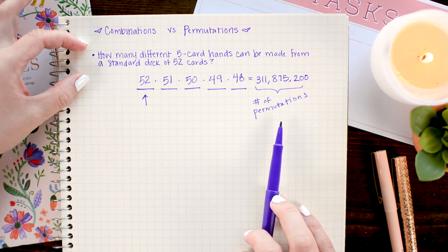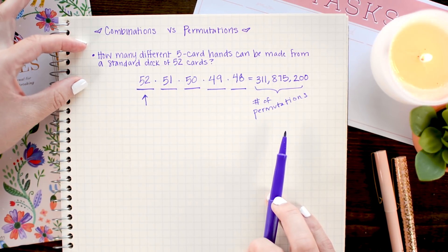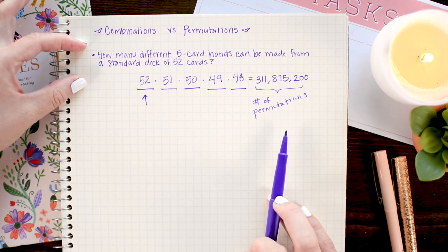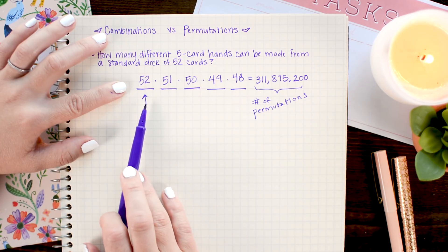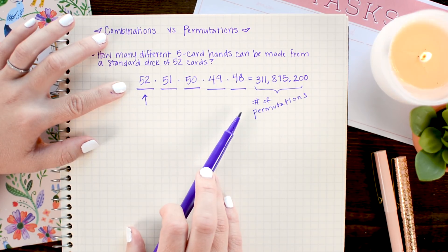It doesn't matter if I draw a two of hearts first or a two of hearts second, as long as a two of hearts is in my hand. This means that the arrangement, a two of hearts, three of hearts, four of hearts, five hearts, six hearts,